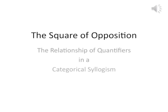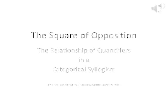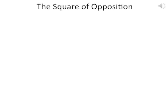The square of opposition: the relationship of quantifiers in a categorical syllogism. The square of opposition is a simple tool that philosophers and logicians use to diagram the quantifiers in a categorical syllogism. It shows us the relationship between contradictories, contraries, subalterns, and subcontraries with relation to the quantifiers indicating the values of the propositions under consideration.